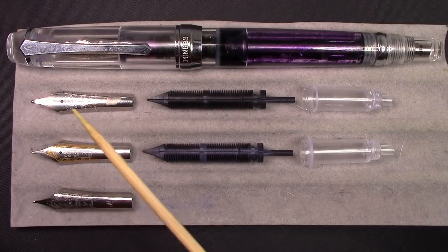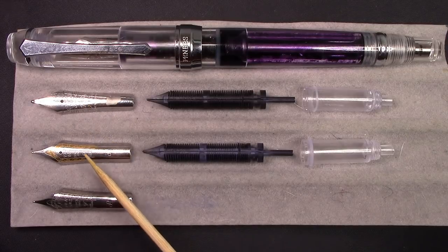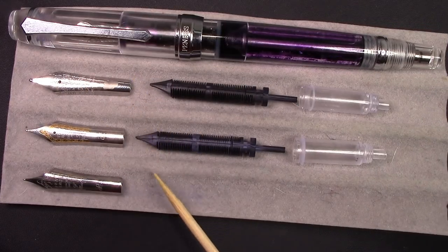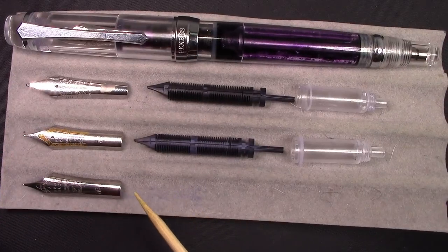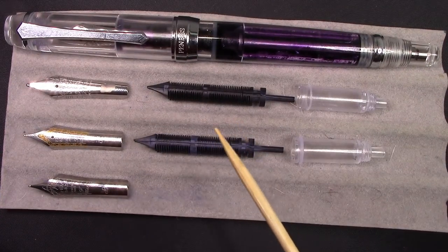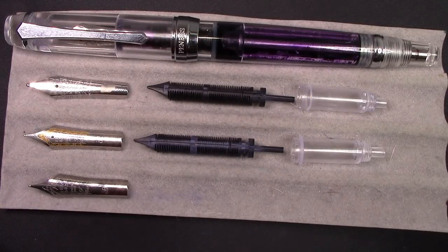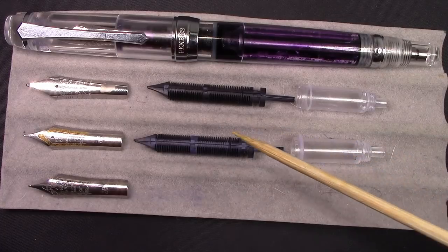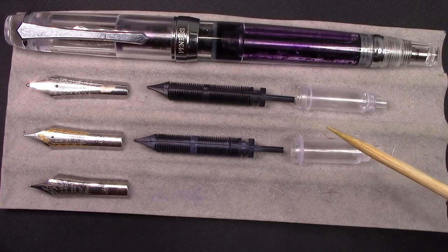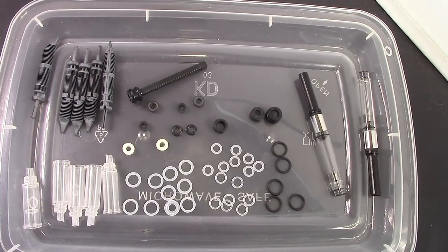Here's the Nemosine broad, here's the regular two-tone that was in this pen to begin with, and here's your regular silver pen. A few videos ago you may have seen that I got a parts bag of PenBBS parts which included feeds, nib collars, o-rings, pistons, and everything else.